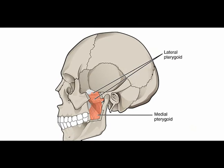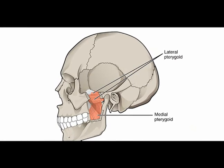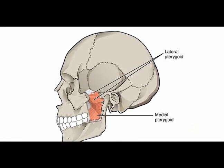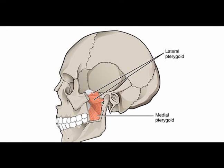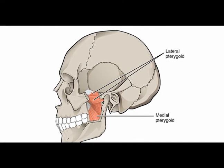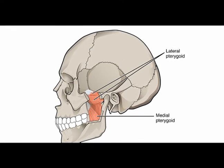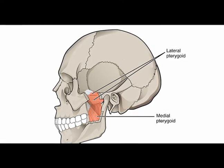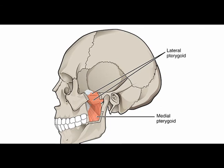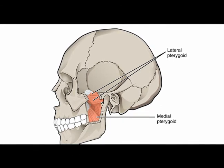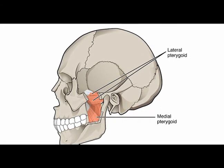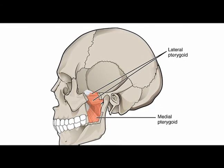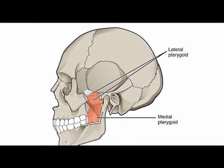The lateral pterygoid muscle functions as the sole muscle of mastication to cause depression of the mandible. It actively opposes the other muscles of mastication and allows for depression of the mandible. It also assists with protrusion and side-to-side movement of the mandible.